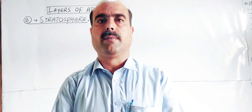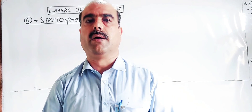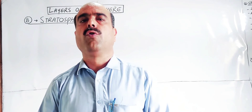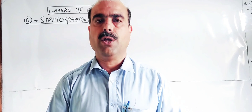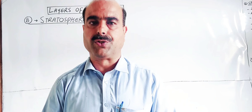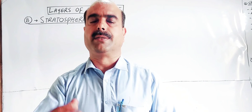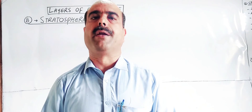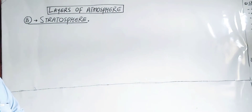Bismillahirrahmanirrahim. Dear students, Assalamu Alaikum. Welcome to my YouTube channel Nasib Zada Triple S. I hope that you will be in the best position of your health. Students, today I have a new topic from environmental chemistry, and that is the second layer, the second region of atmosphere, which is stratosphere. The atmosphere has total four regions, four layers.